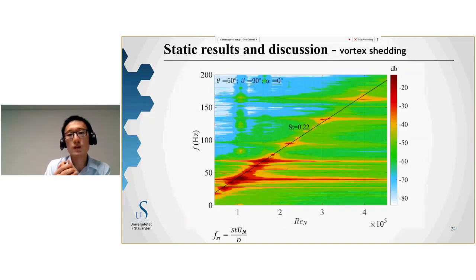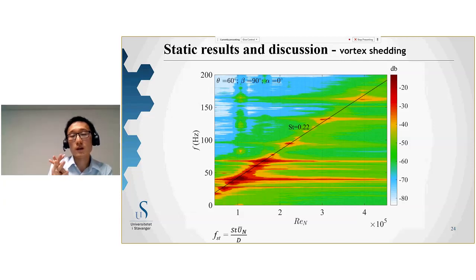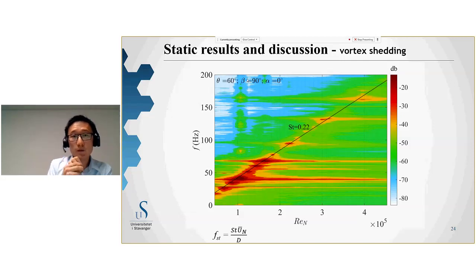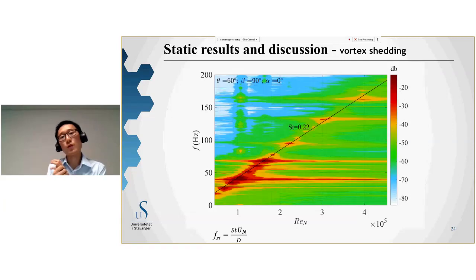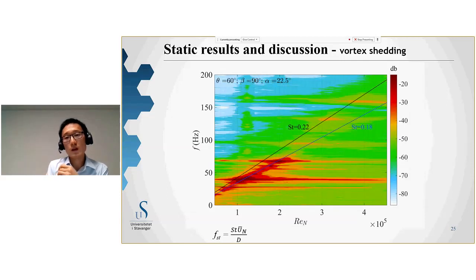Some results show vortex shedding — a spectral contour plot at different wind velocities. We observed classical strong shedding frequency for the cable at a yaw angle of 90 degrees. At 90 degrees yaw with axial rotation of 22.5 degrees, we observed two Strouhal numbers: at higher Reynolds numbers governed by 0.22, and at smaller Reynolds numbers governed by 0.18.